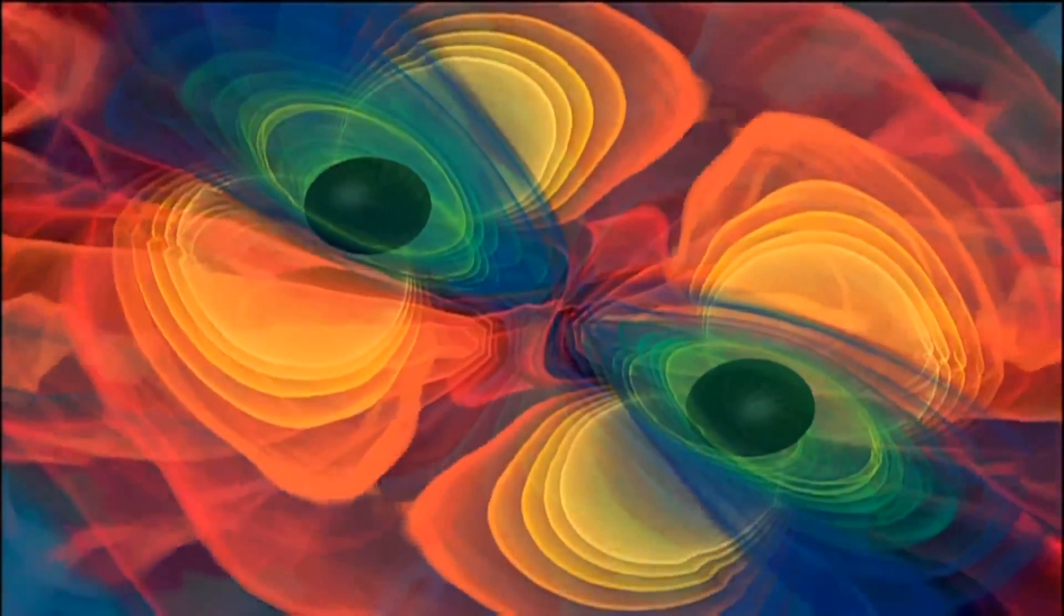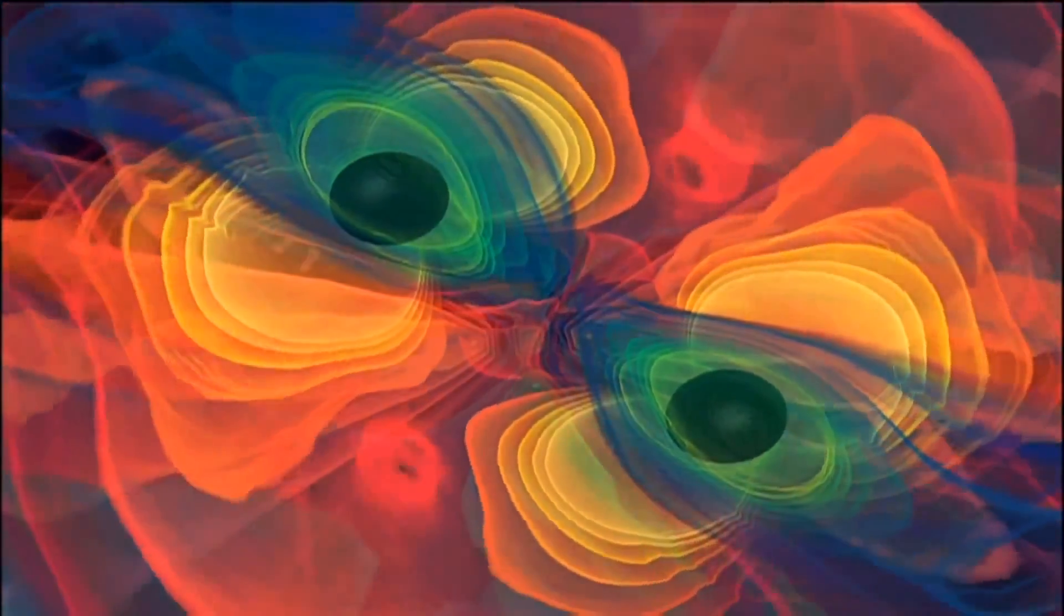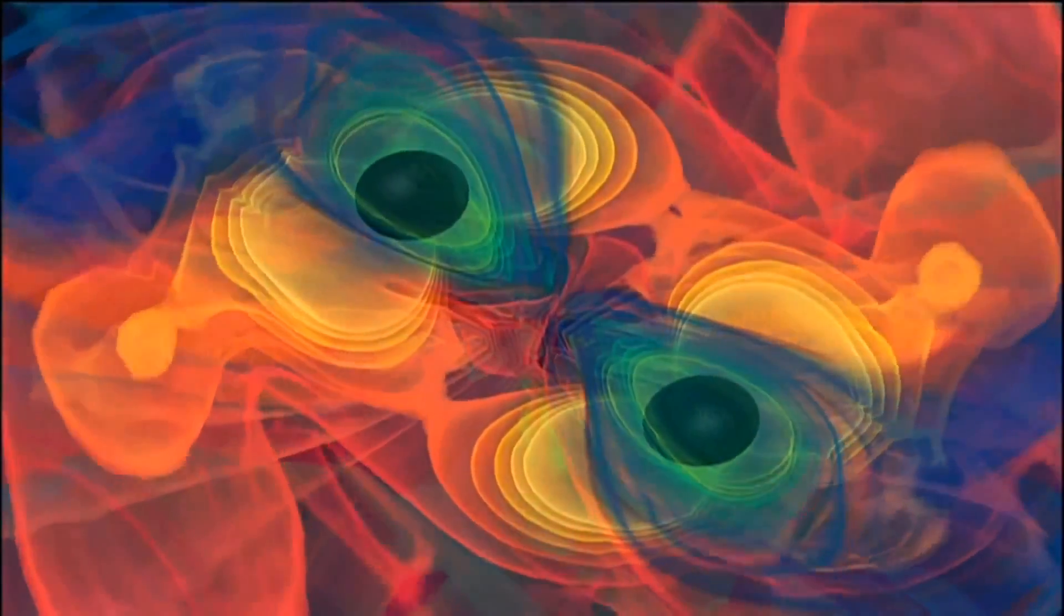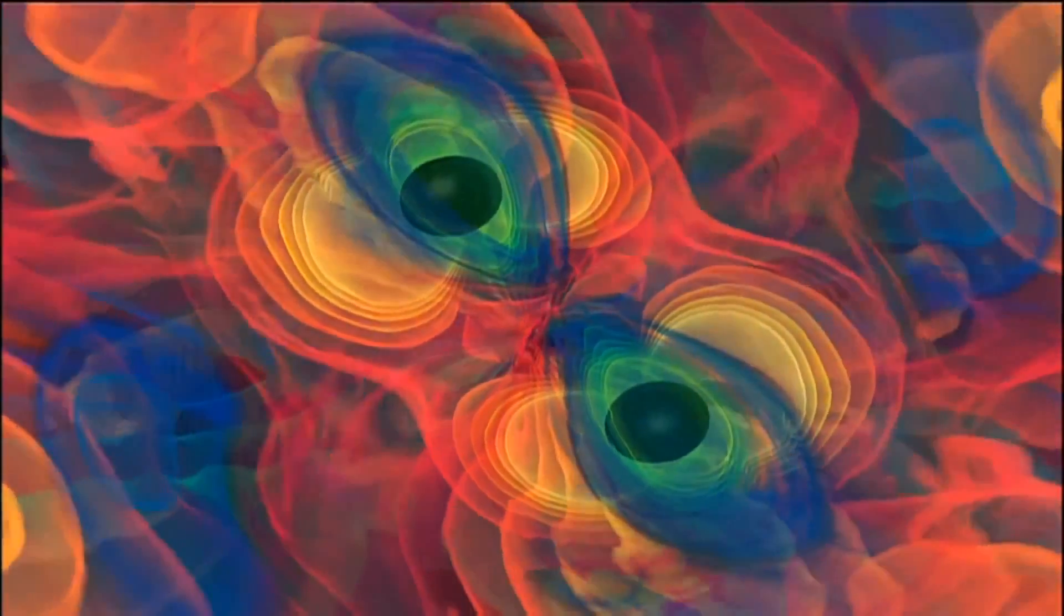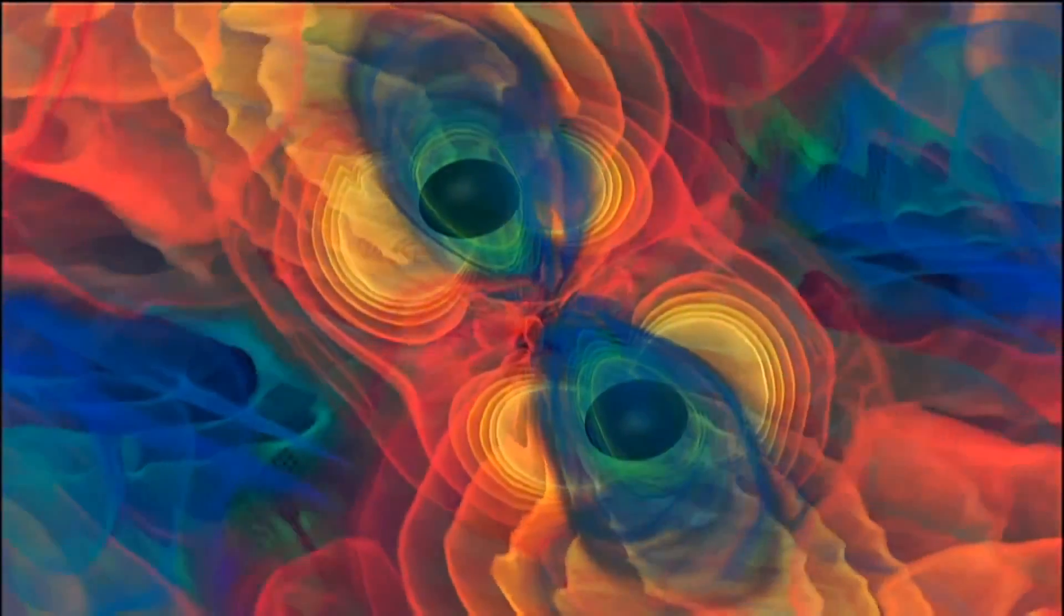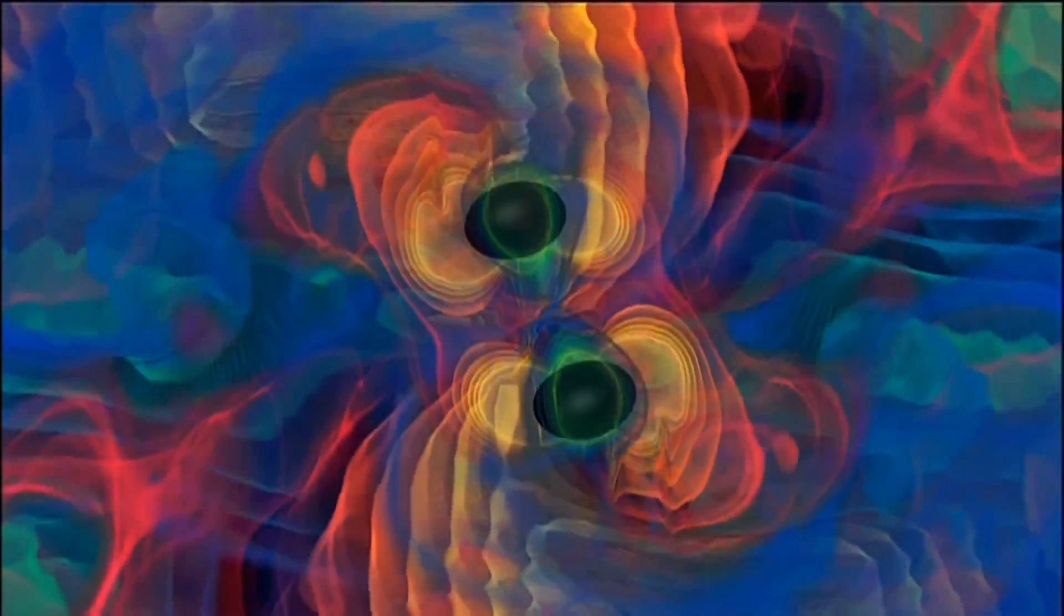This simulation shows what happens. As two black holes get close, they turn space into a turbulent sea of gravity waves. These waves have the effect of carrying energy away from the orbit itself. That allows the pair to draw each other in and merge into one.